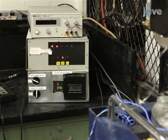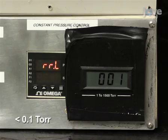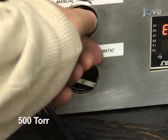To ignite the arc plasma, pump down the cylindrical chamber to a pressure of less than 0.1 Torr of vacuum and then fill it with helium to 500 Torr.